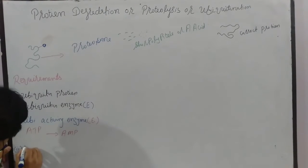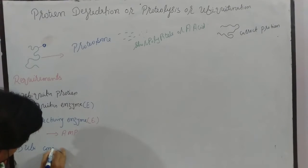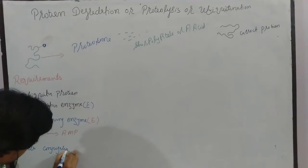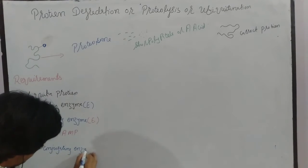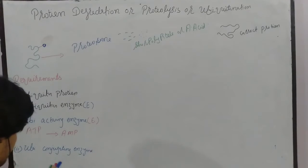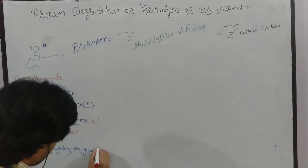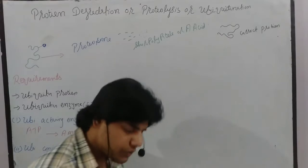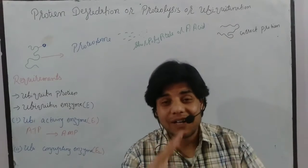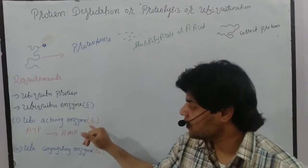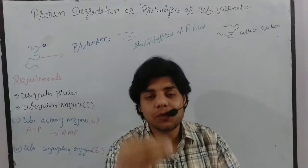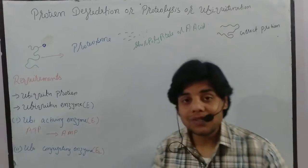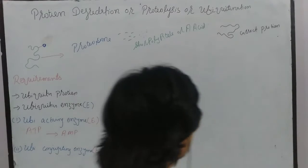The second enzyme required is ubiquitin conjugating enzyme, denoted as E2. Its main function is to transfer the activated ubiquitin — which was activated by E1 — to the cysteine residues of E2.